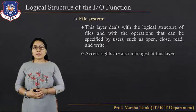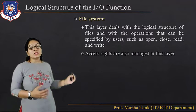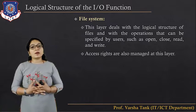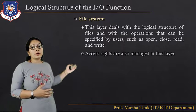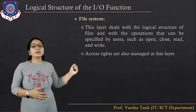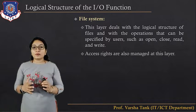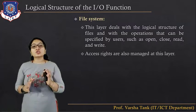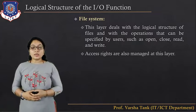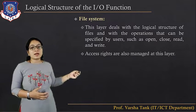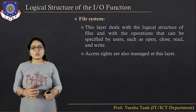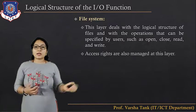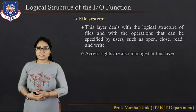The file system layer deals with the logical structure of files and operations that can be specified by the user, such as open, close, read, and write. All access rights are also managed at this layer — which process has access rights to execute or access resources is managed here.